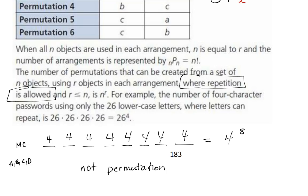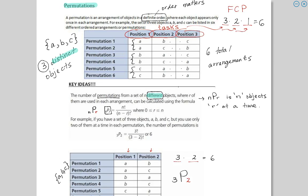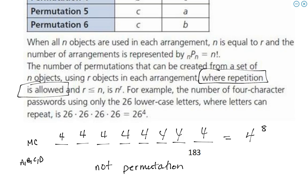With permutations, once you use an object you're no longer allowed to use it again — it goes three, then two, then one. Whereas with the multiple choice question it was four, four, four — you can repeat. So that one's not a permutation. When repetition is allowed, it's always N to the power R, where N is the number of objects and R is the number of blanks.